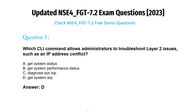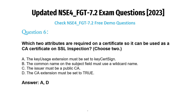Question 5: Which CLI command allows administrators to troubleshoot layer 2 issues such as an IP address conflict? A) get system status. B) get system performance status. C) diagnose sys top. D) get system arp. Answer: D.